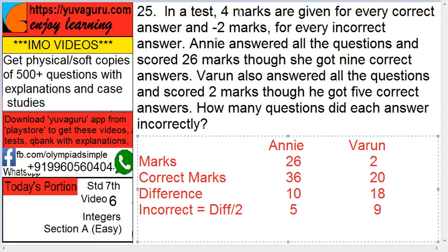In a test, 4 marks are given for every correct answer and minus 2 marks for every incorrect answer. Annie answered all questions and scored 26 marks, though she got 9 correct answers. Varun also answered all questions and scored 2 marks, though he got 5 correct answers. How many questions did each answer incorrectly?